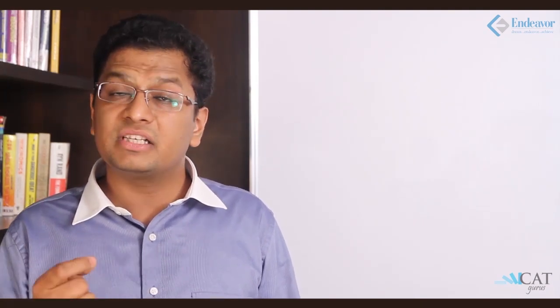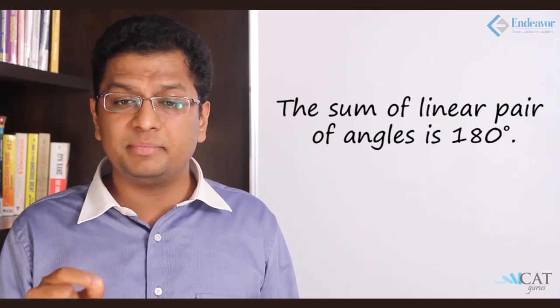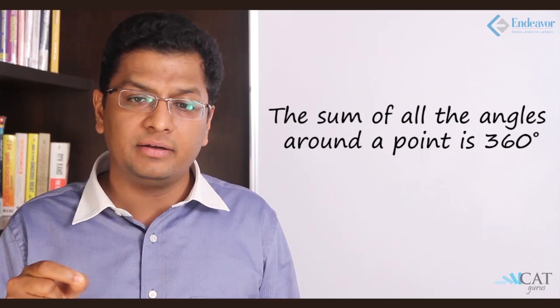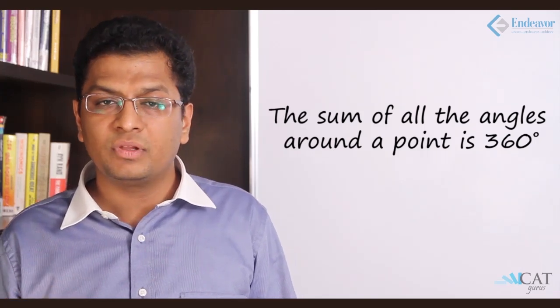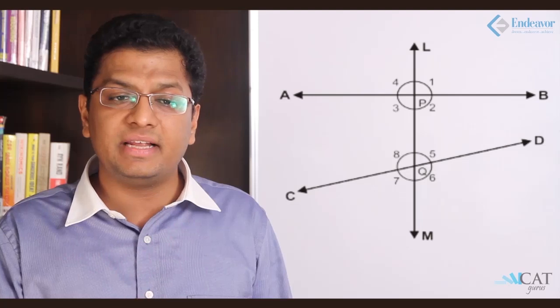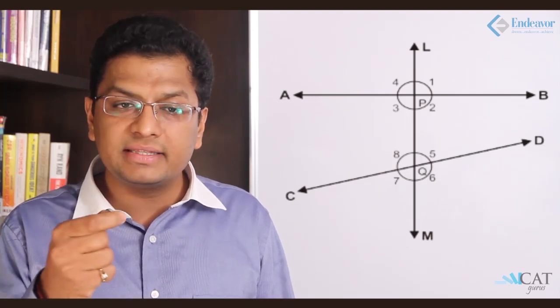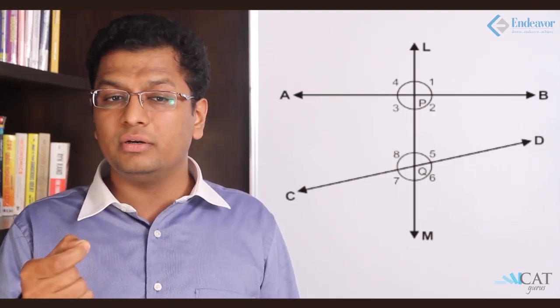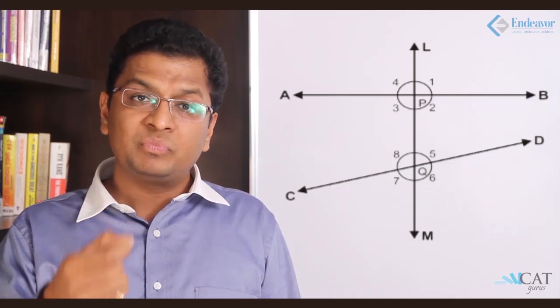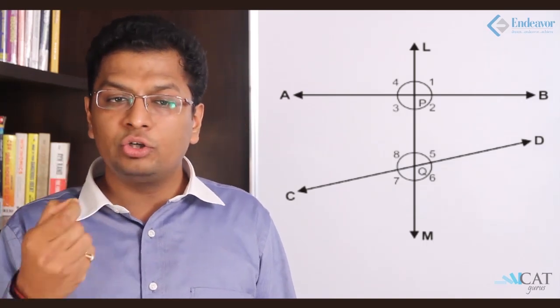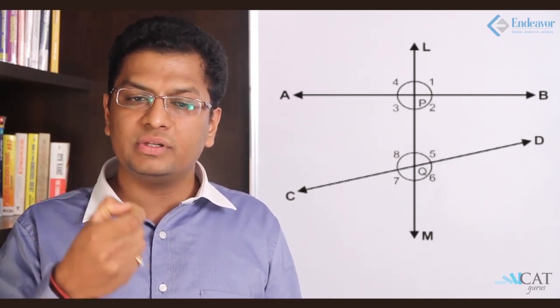The sum of a linear pair of angles is 180 degrees, whereas the sum of all angles around a point is 360 degrees. Vertically opposite angles — such as angles 5 and 7, 8 and 6, 1 and 3, 2 and 4 — are all equal. So angle 5 = angle 7, angle 8 = angle 6, angle 2 = angle 4, and angle 1 = angle 3.